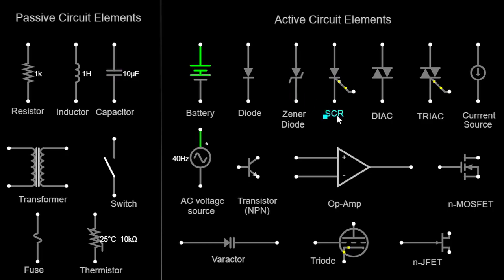An SCR (silicon-controlled rectifier) is a four-layer solid-state device that acts as a switch, allowing current to flow in one direction when a control signal is applied. It is widely used in power control applications and is represented by three stacked layers with a control terminal. A DIAC is a two-terminal device that conducts current in both directions when a certain voltage threshold is reached, often used in triggering TRIACs in AC circuits. A TRIAC is a three-terminal semiconductor device that can conduct current in both directions and is often used for controlling AC power to devices such as dimmer switches and motor speed controllers.